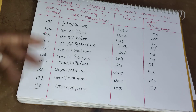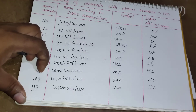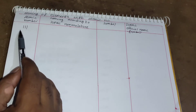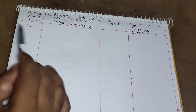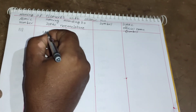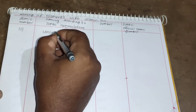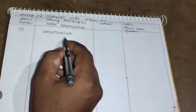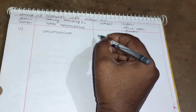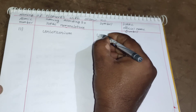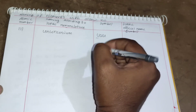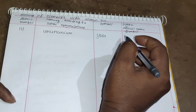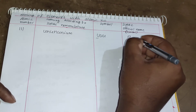For element 111: 1 = un, 1 = un, 1 = un, plus '-ium' gives Unununium. The symbol is Uuu. The IUPAC official name for element 111 is Roentgenium, symbol Rg.